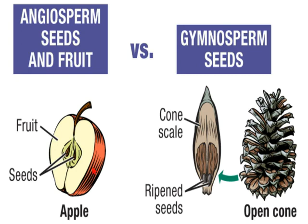In seed-bearing plants we have angiosperms and gymnosperms. The difference is that in angiosperms, seeds are enclosed within the ovary — the fruit is basically the ovary. In gymnosperms, the seeds are naked and not enclosed within the ovary; they are exposed. Plants whose seeds are exposed and not enclosed in the ovary are called gymnosperms.